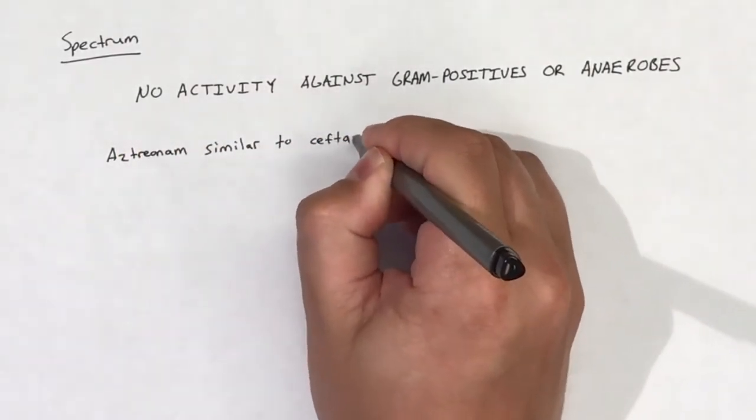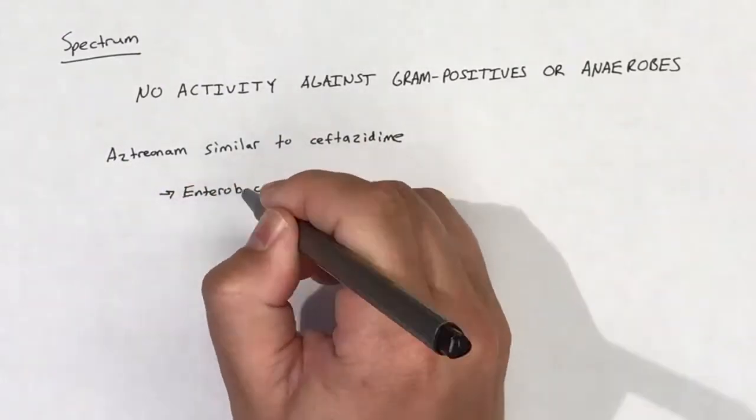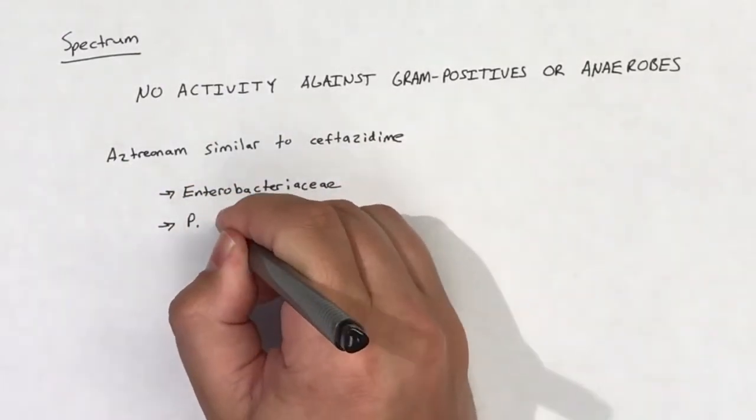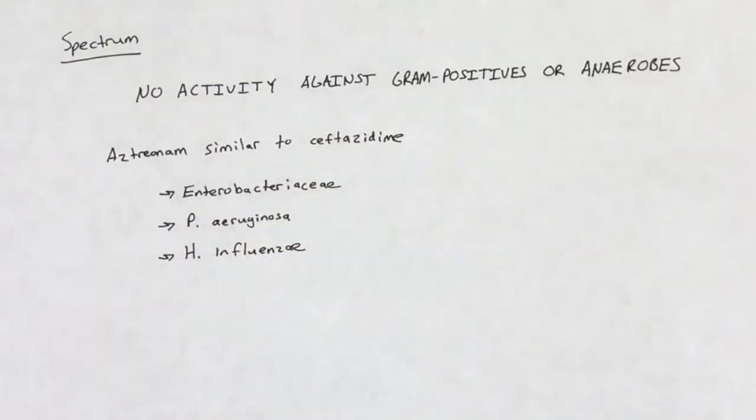Because of this, aztreonam shares a similar gram-negative spectrum as ceftazidime. This includes action against Enterobacteriaceae and P. aeruginosa. Aztreonam is also effective against H. influenzae.